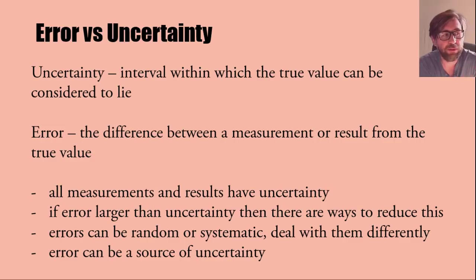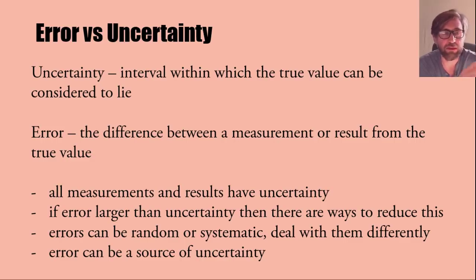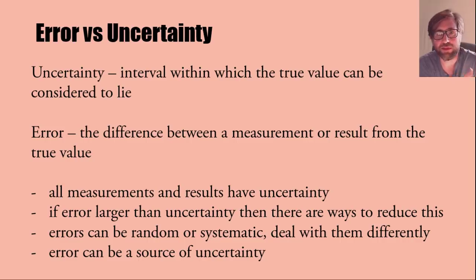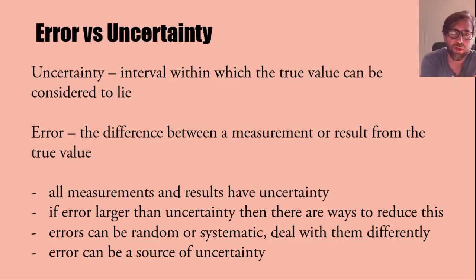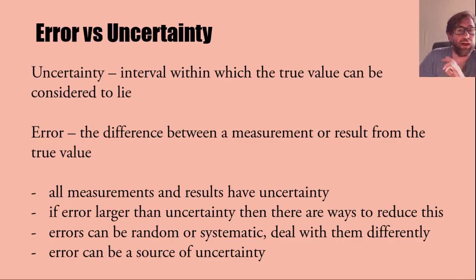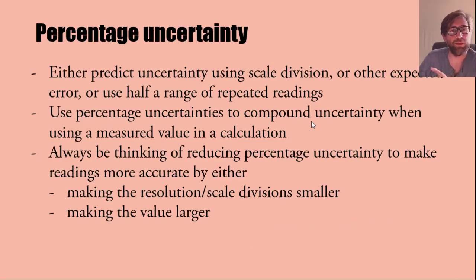Errors can be random or systematic, and you deal with those two things differently. You can only improve random errors by repeating and looking for anomalies. A systematic error has to be addressed through a method change, an instrument change, or a change to the method to give you a different result. Remember: an error can cause an uncertainty.